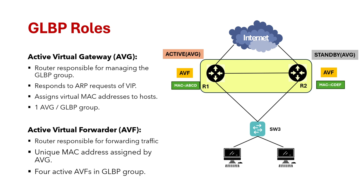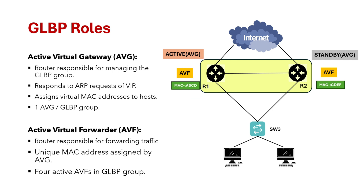A router can be both an AVF and an AVG at the same time. As you can see here, router R1 is acting as both AVG and AVF. Let's see how GLBP works.